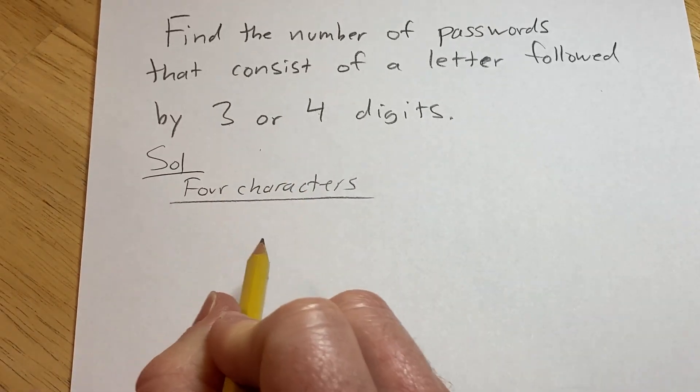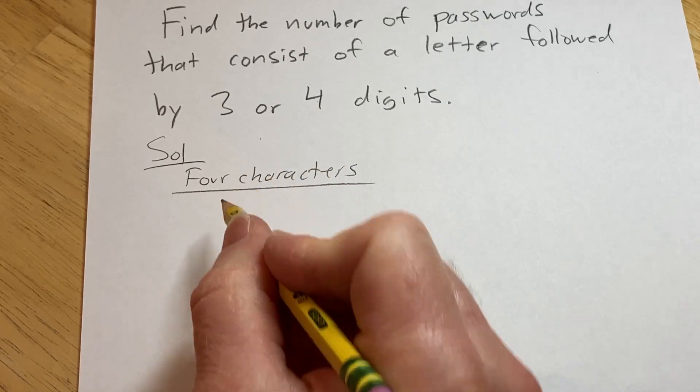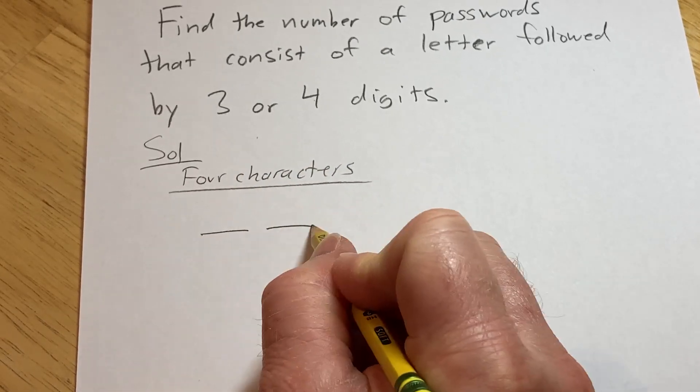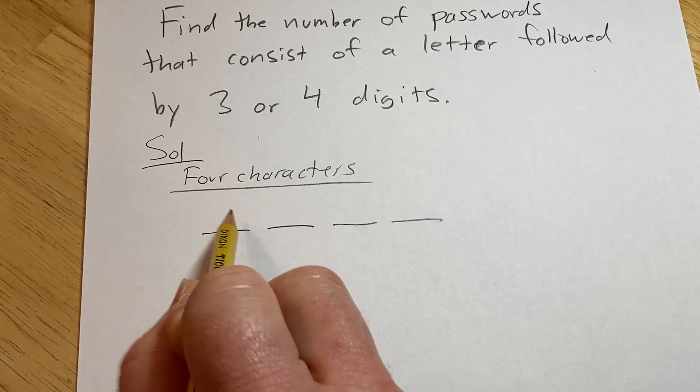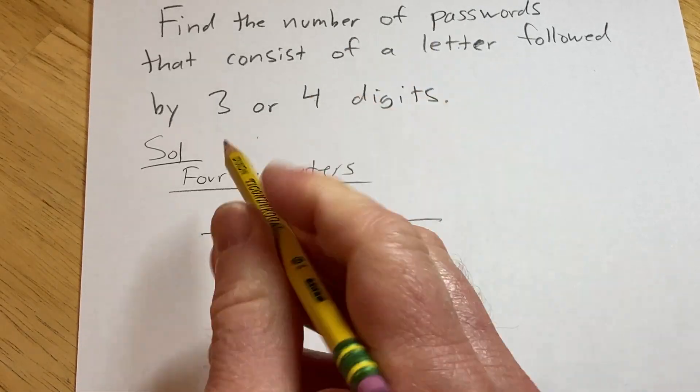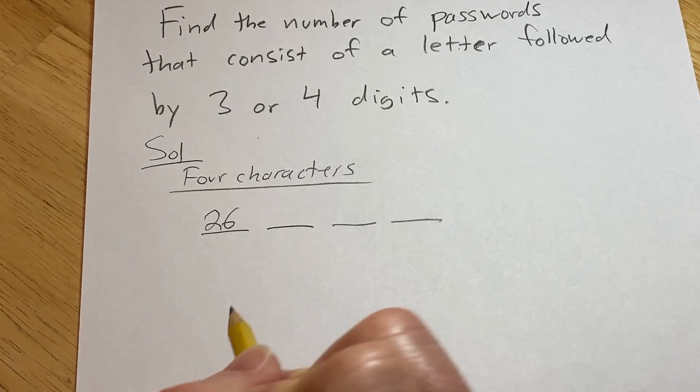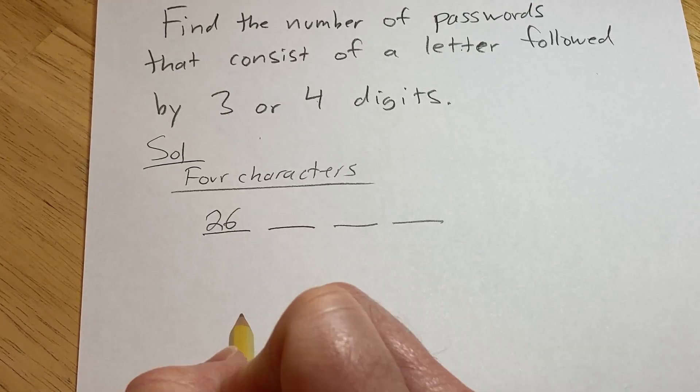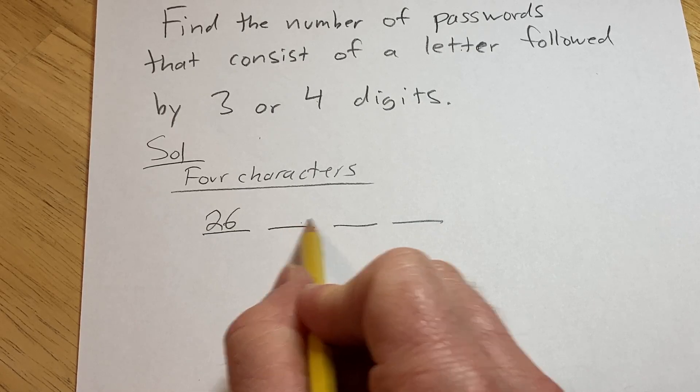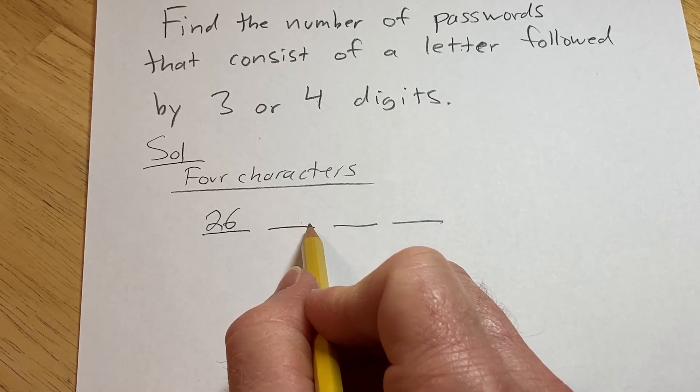How many four character passwords do we have that fit this structure? We have four positions. So the first character has to be a letter, so there are 26 letters in the English alphabet, so there are 26 choices for the first character.